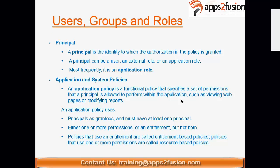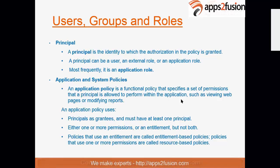A principal is the identity to which authorization in a policy is granted — it is the entity to which you grant a policy. There are two types of policies: application policy and system policy. An application policy is a functional policy that specifies a set of permissions, allowing specific operations within the application — that becomes your application policy.